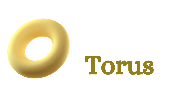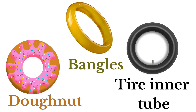Next shape is torus. This is the shape of a torus. Let us see some few examples for that shape: donut, bangles, tire inner tube. These are the examples for the shape of torus.